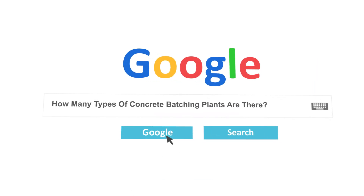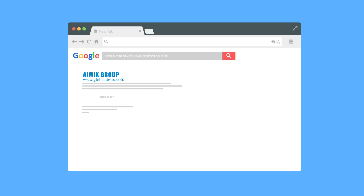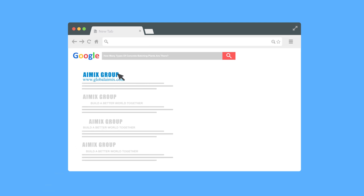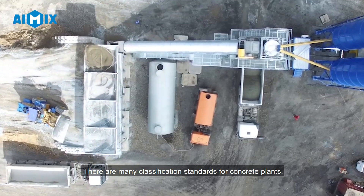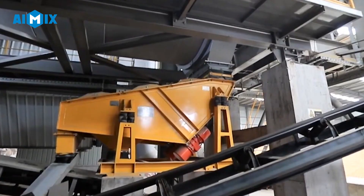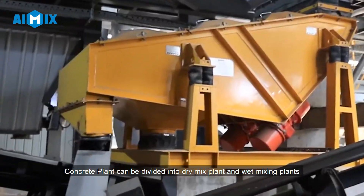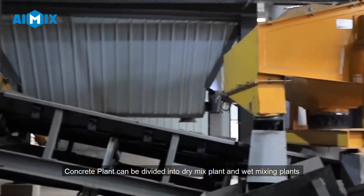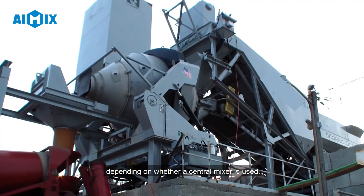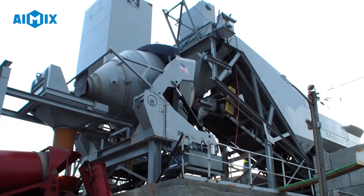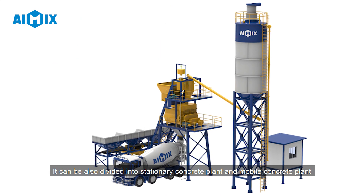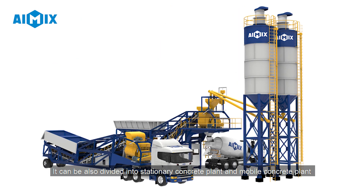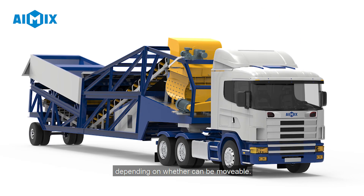How many types of concrete batching plants are there? There are many classification standards for concrete plants. Concrete plants can be divided into dry mix plants and wet mixing plants, depending on whether a central mixer is used. They can also be divided into stationary concrete plants and mobile concrete plants, depending on whether they can be moved.